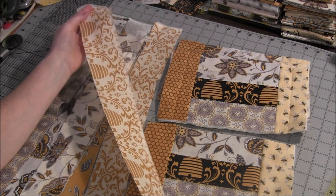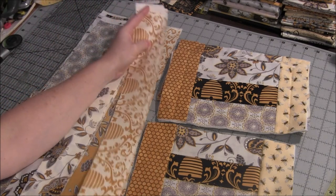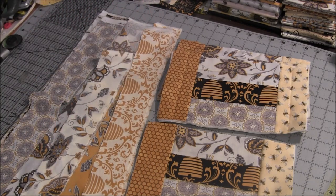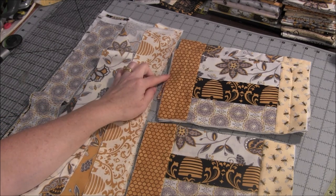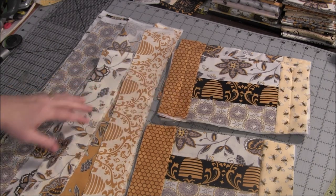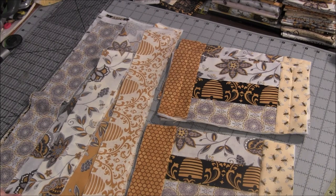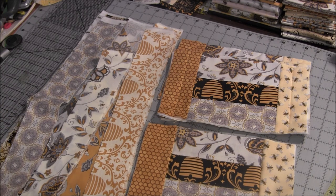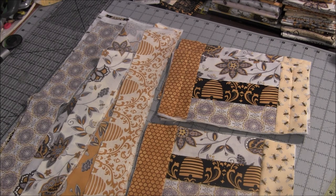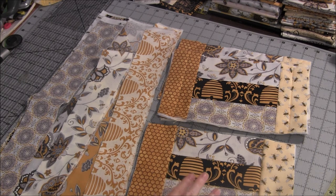So because we have these nice jelly roll strips, basically you'll need one jelly roll strip to bind each one of your mug rugs. So just pick a coordinating jelly roll strip that you want to use for the binding. And then we will put it on, and I will show you how to put that on.